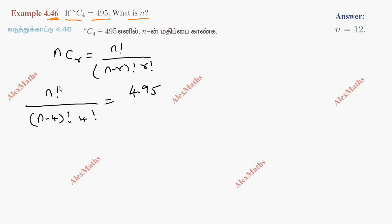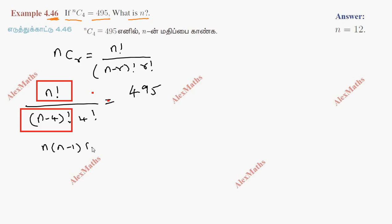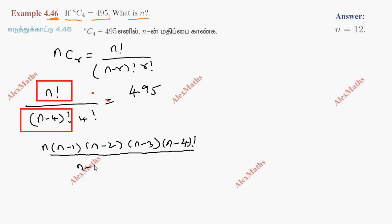Now, expanding n factorial as n into n minus 1 into n minus 2 into n minus 3 into n minus 4 factorial, and stopping at n minus 4, we get that expression divided by n minus 4 factorial into 4 factorial. So 4 factorial is 4 into 3 into 2 into 1, and the whole expression equals 495.